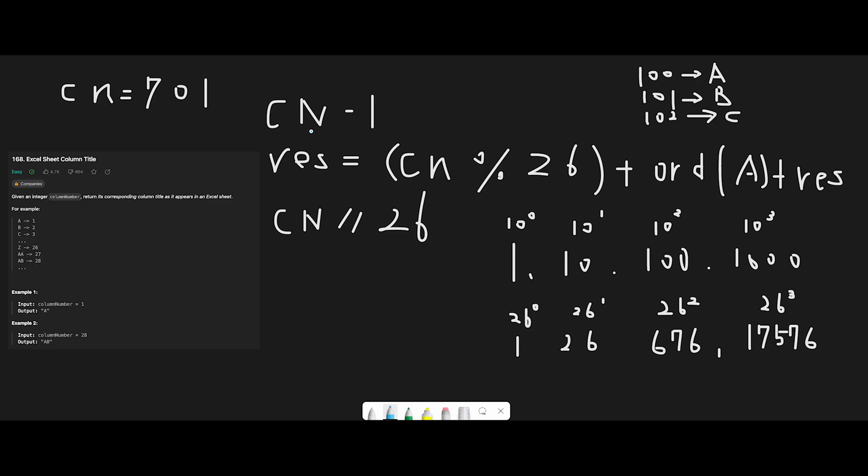That's why we can use a base 26 system. But base 26 system usually starts from 0 to 25, so if we map the alphabet and the base 26 system, 0 should be A and then 1 should be B.